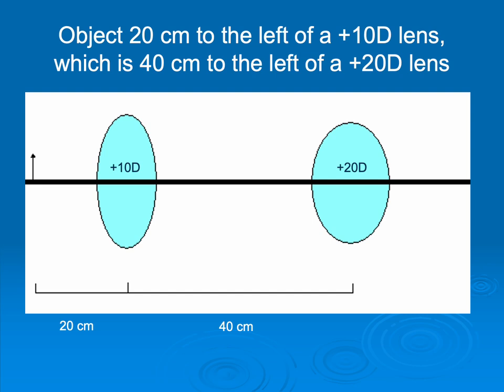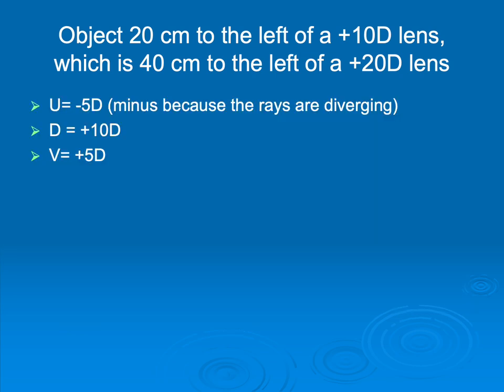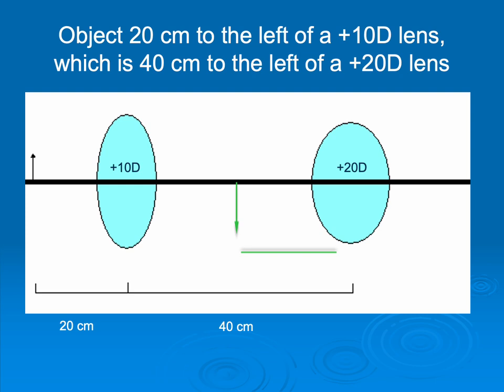And then the d for the next half of the problem is going to be the plus 20. And when we're working that part of it, we're going to ignore all that plus 10 stuff that came before. All we want to know is where that first image is because that becomes the object that's going to create the final image. So here we go. So we know that the object is 20 centimeters left of that first lens, so u must be a minus 5. And then we're given the d, and so we can calculate that v is plus 5, so we know the location of the first image, also called the intermediate image, is going to be 100 divided by 5. So we add that to our sketch. So here it is. And if it is 20 centimeters to the right of that plus 10 lens, and it's 40 centimeters from one lens to the other, it therefore must be 20 centimeters to the left of your plus 20 lens.